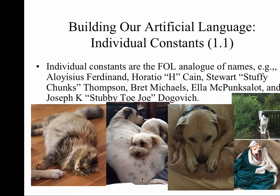In order of the photos from left to right, we have Brett Michaels, Joe Doggy and Ella McPunks-a-Lot, Stuart Stuffy Chunks Thompson, the kitty at the top far right is Aloysius Ferdinand, and Horatio H. Cain is the puppy cuddled up in his blanket on the sofa. So named entities — and here I've chosen dogs and cats — but anything we can identify by a name: a person, place, time, or thing, is called an individual constant.